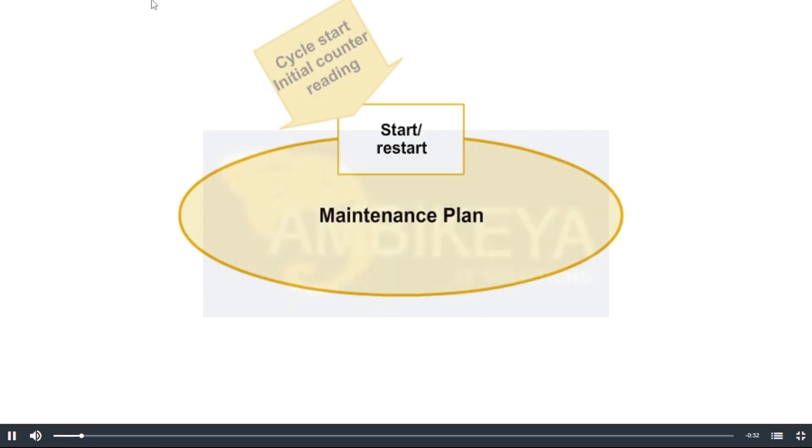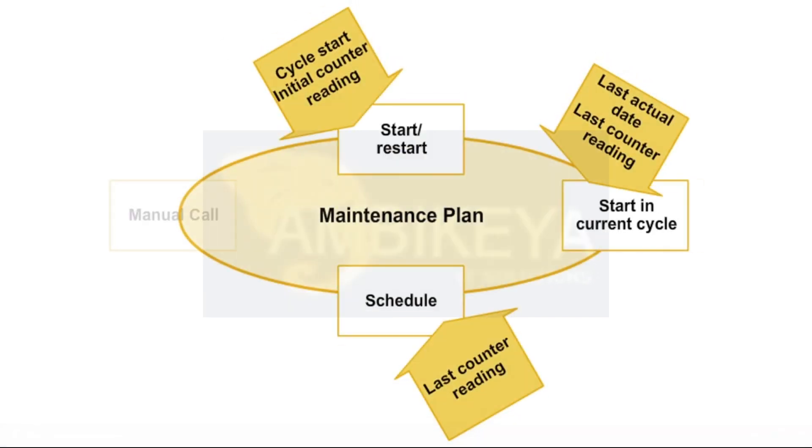The scheduling functions for the performance-based strategy plan are the same with one exception, namely the single cycle plan. At the start of the cycle, it is possible to go directly into an existing process flow for preventive maintenance. See time-based strategy plan.